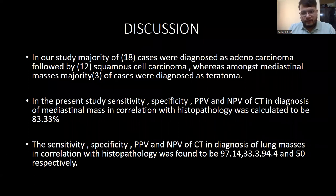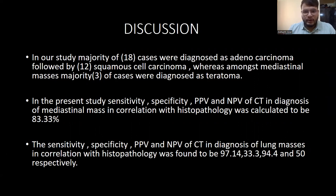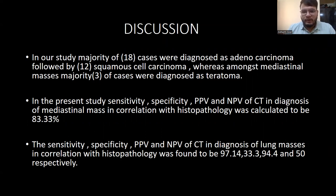In our study, a total of 50 cases were taken. Out of these, around 30 turned out to be lung cancers — 18 cases diagnosed as adenocarcinomas and 12 as squamous cell carcinomas. Among mediastinal lesions, the most common was teratoma. The sensitivity, specificity, and positive predictive value of CECT correlated with histopathology were quite high: sensitivity was 97%, specificity was 94%, and negative predictive value was 50%.